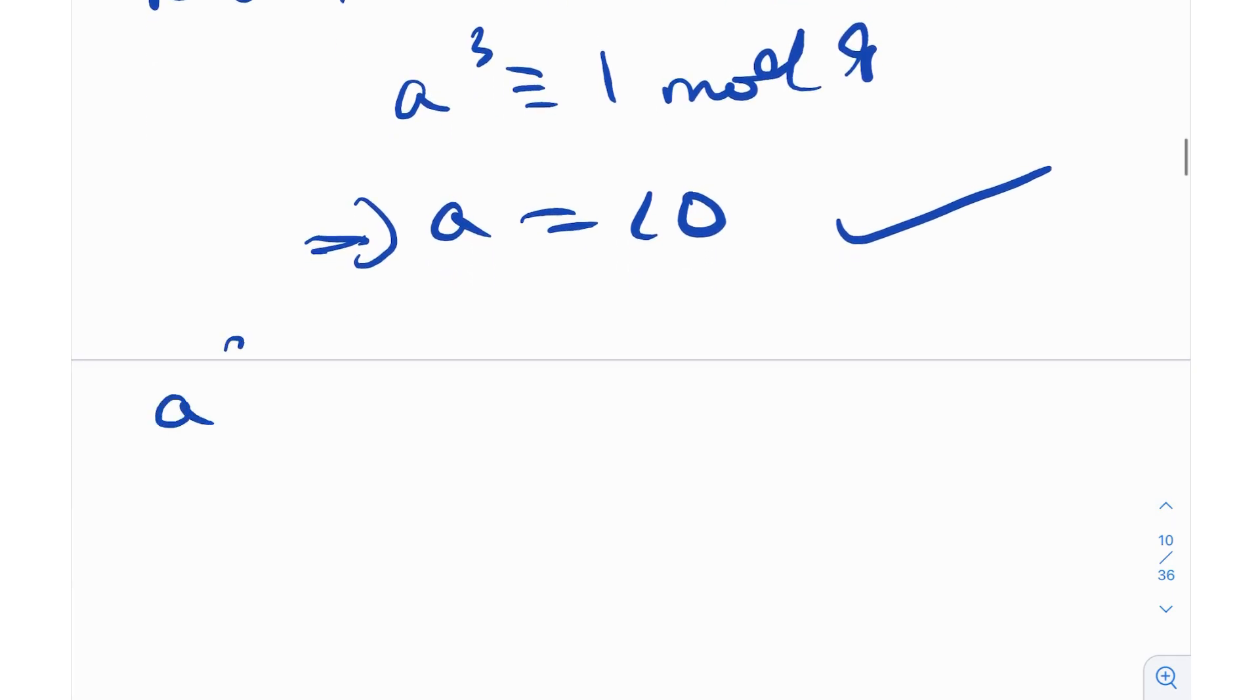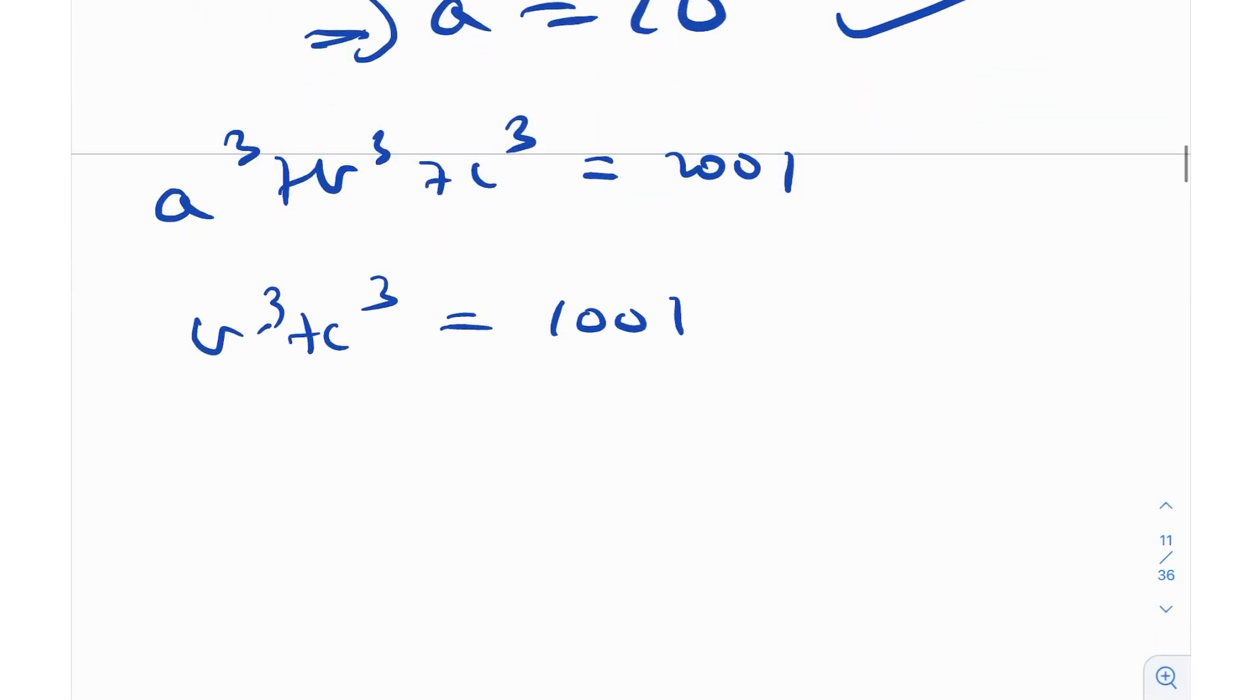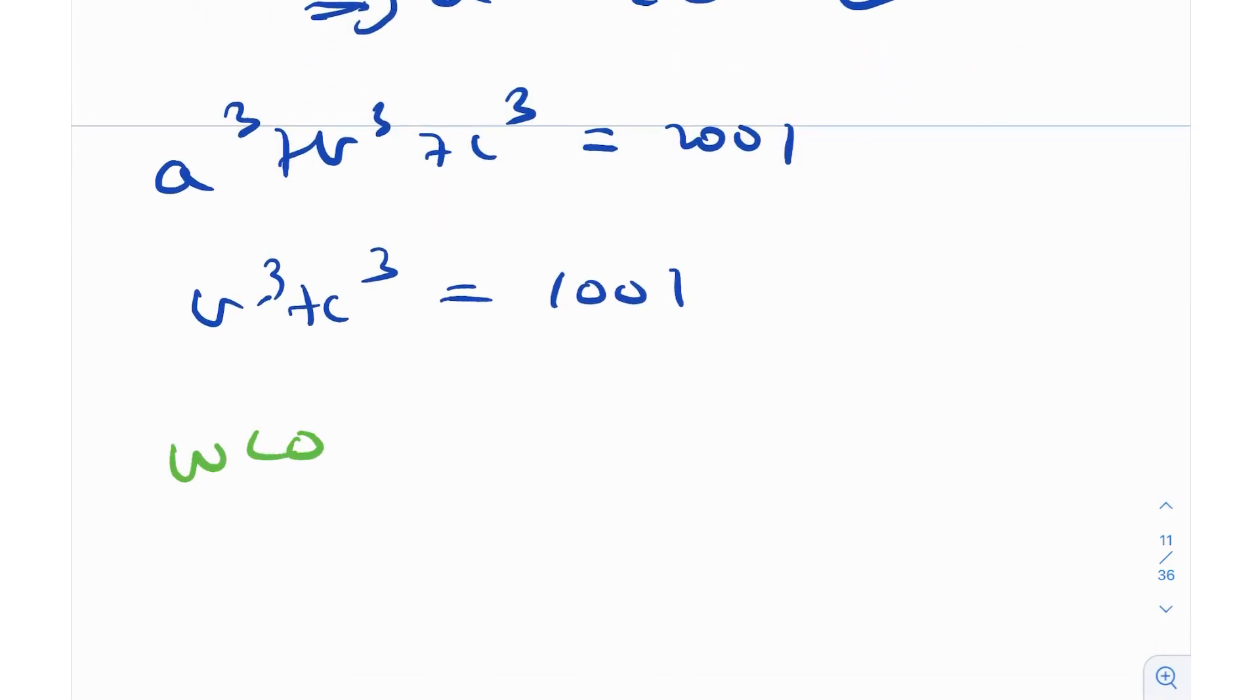We have the equation A³ + B³ + C³ = 2001. If I just plug in A = 10, I'll get B³ + C³ = 1001. That's awesome. Now, because you can reduce it down to two variables, the method is still the same. Without loss of generality, B ≥ C, which is what we had assumed earlier as well.